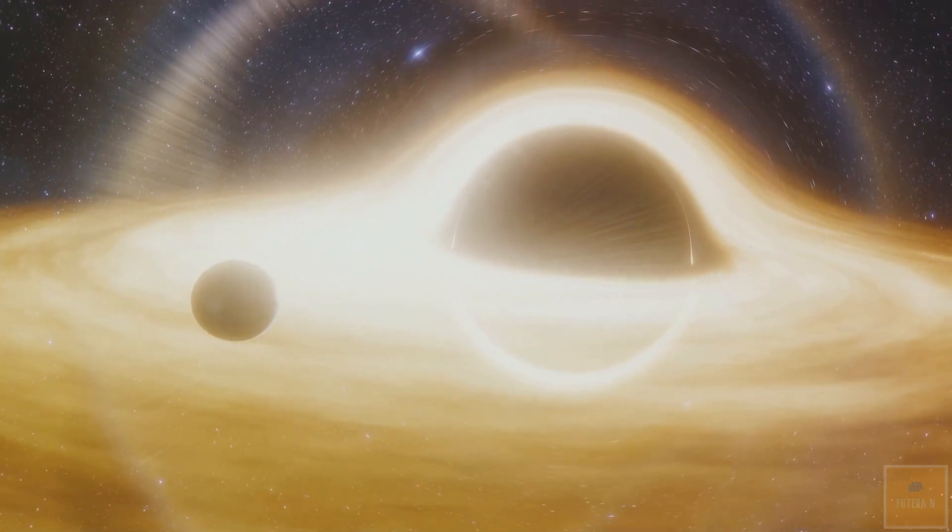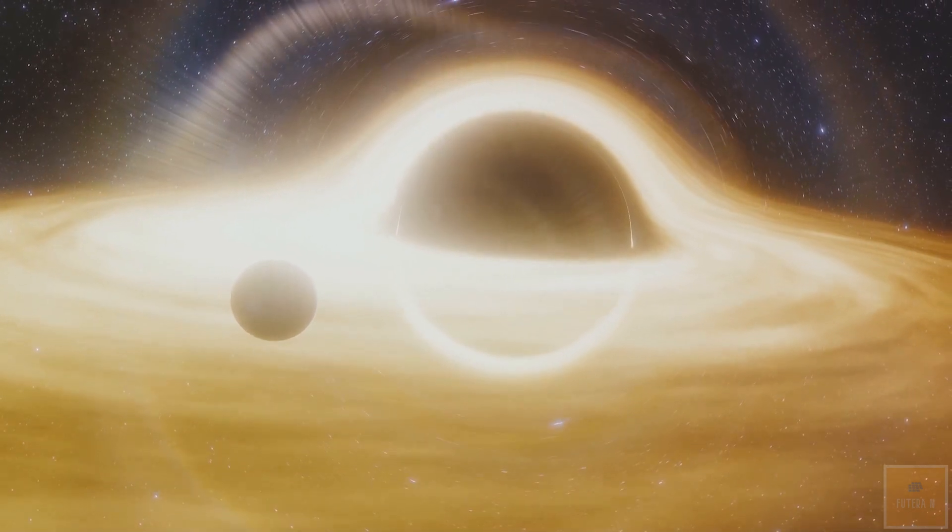If a rogue black hole approached our solar system, its gravitational pull could disturb the sun and the planets, but the likelihood of such an event is extremely low.